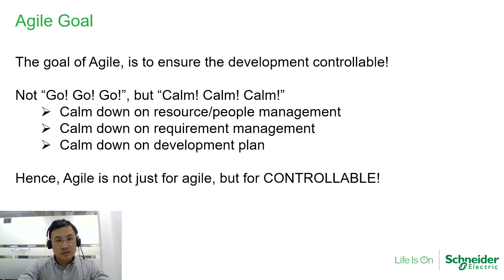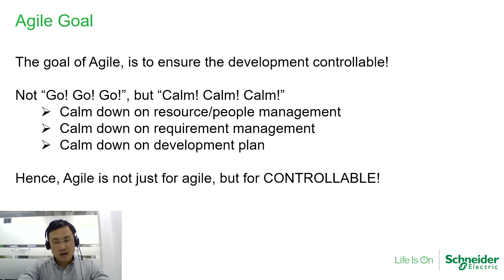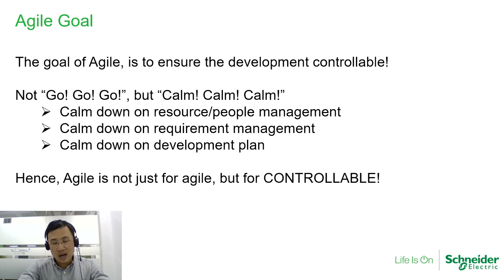The goal of Agile is to ensure the development is controllable — not rush, but calm. Calm down resource management, calm down requirement management, calm down the development plan. Agile is not just for Agile's name. Agile is for controllability of a bigger project with dynamic and unclear requirements.